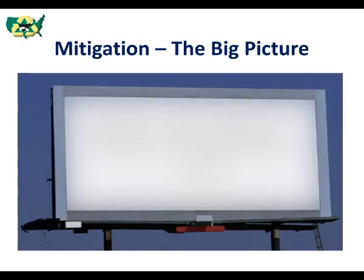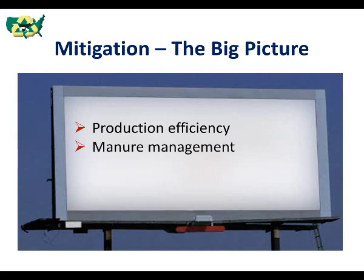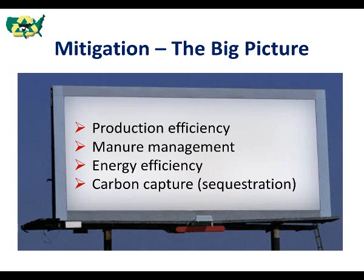From a big-picture perspective there are really four main categories of mitigation practices for animal agriculture. First, production efficiency — producing more output of meat, milk, and eggs per unit input. Second, improving manure management practices that reduce greenhouse gas emissions while addressing water and air quality concerns. Third, energy efficiency as we move toward more controlled environments. And finally, carbon capture and storage — also called carbon sequestration — by increasing organic matter in soils and maintaining cover crops on pastures, cropland, and rangelands.